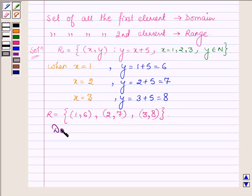And the domain of R will be the set of first element of these ordered pairs which are 1, 2 and 3.